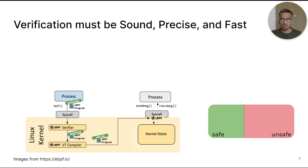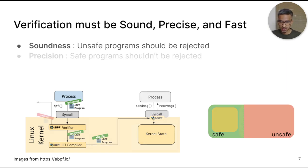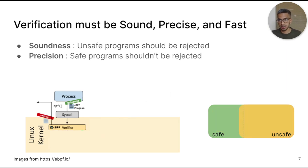Static analysis in the EBPF verifier must be sound, precise and fast. Soundness means that the verifier should reject unsafe programs as shown on the bottom right. In doing so, it may reject some safe programs, but that's okay. Precision means that the verifier shouldn't reject safe programs due to imprecision in its analysis. Ideally, we want an analysis which is both sound and precise, one which accepts all safe programs and rejects all unsafe programs.